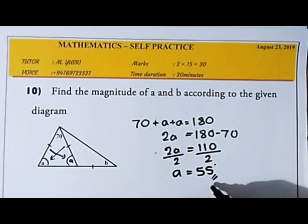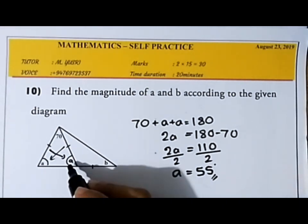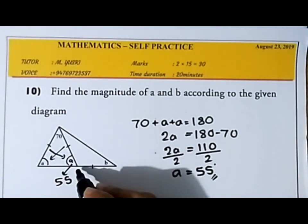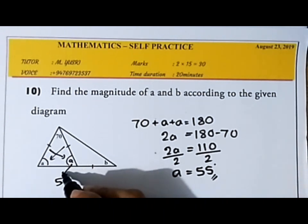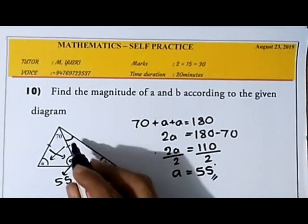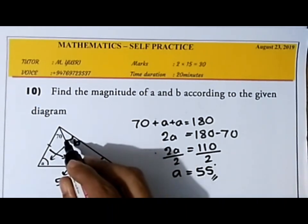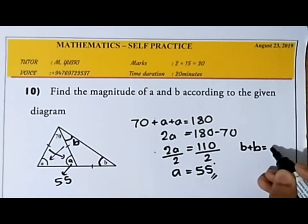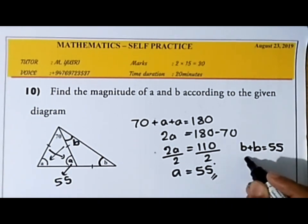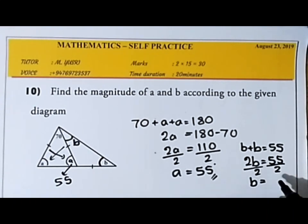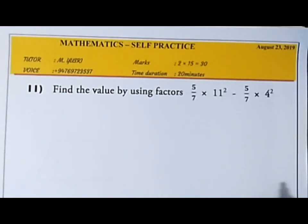Now with a = 55, considering the right-side triangle: 55 is the exterior angle. The exterior angle equals the sum of the two interior opposite angles. Since the inner triangle is also isosceles, both angles are b. So b + b = 55, meaning 2b = 55. Dividing by 2, b = 27.5.